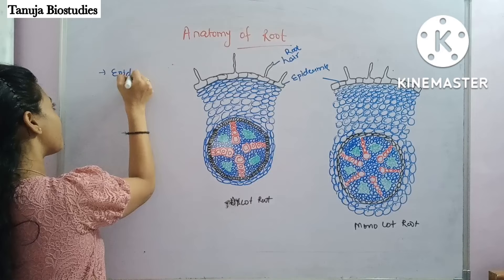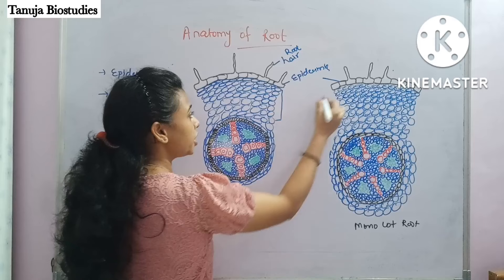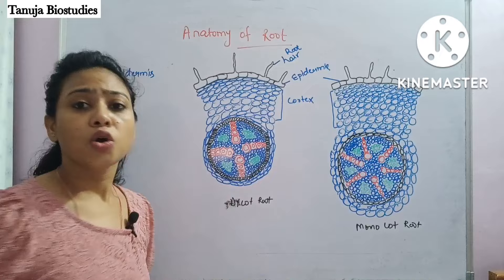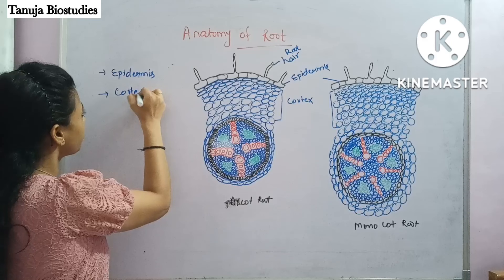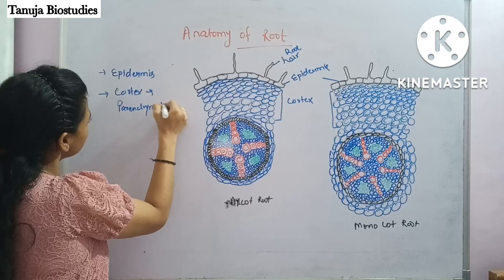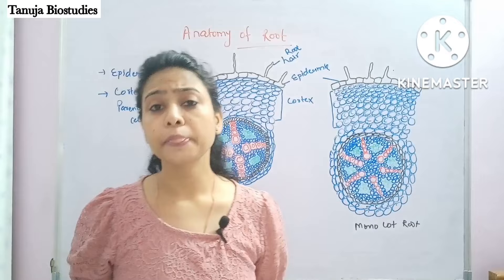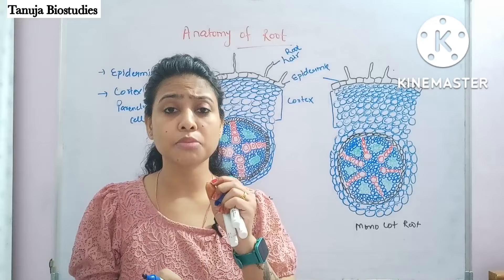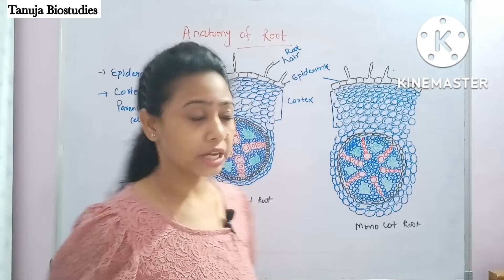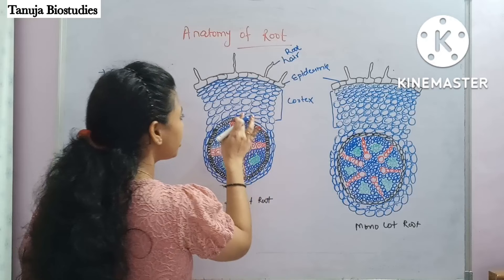The second point — looking at the area to the left side, we call it the cortex. The cortex is basically made up of a large number of parenchymatous cells. These parenchymatous cells are loosely arranged with intercellular spaces also present.